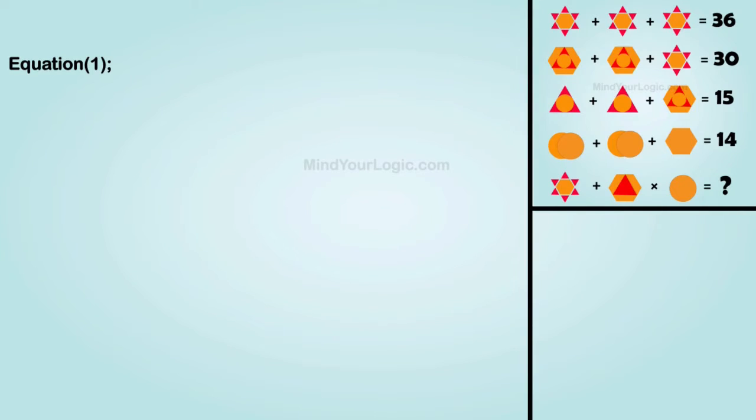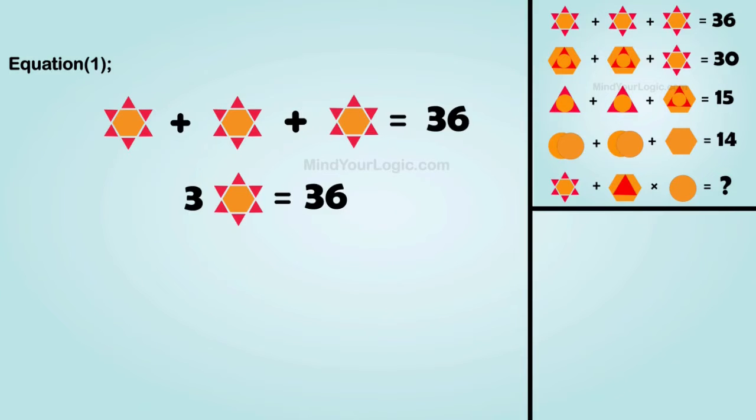Initiating with equation 1. Hexagon star plus hexagon star plus hexagon star equals 36. On simplifying, we get hexagon star equals 12.